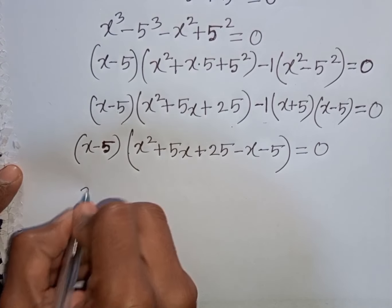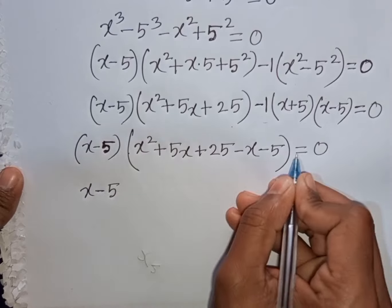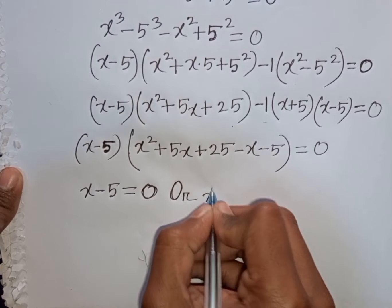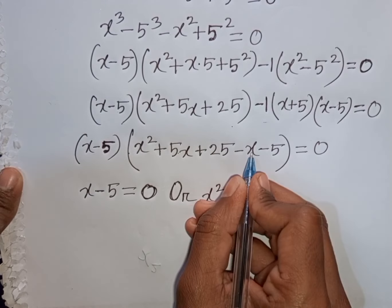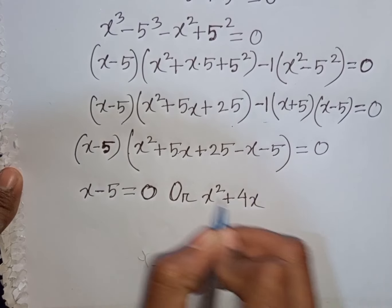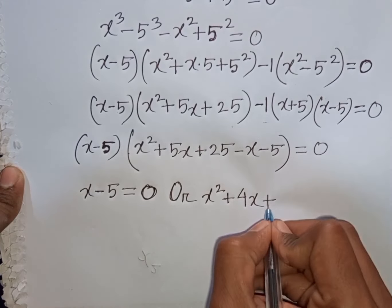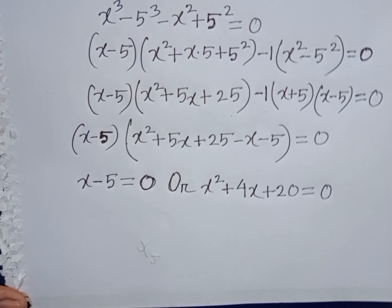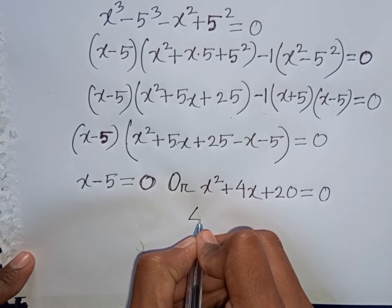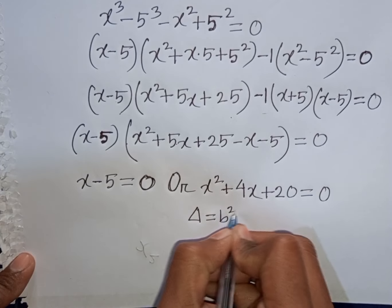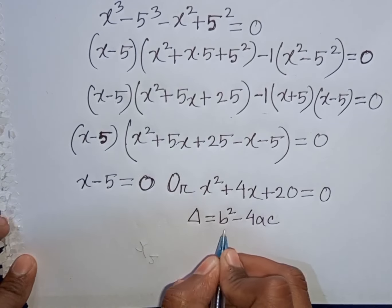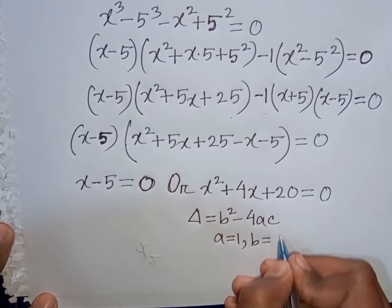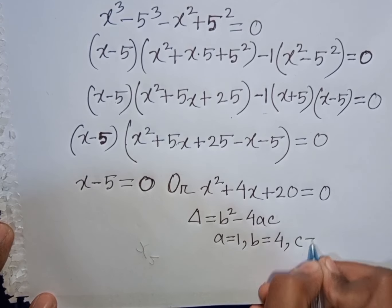Now we can write x minus 5 equals 0, or x square plus 5x minus x, that means plus 4x, then plus 25 minus 5, that means plus 20, then is equal to 0. Here you can apply the discriminant formula. So delta is equal to b square minus 4ac. Here a is 1, b is 4, and c is 20.